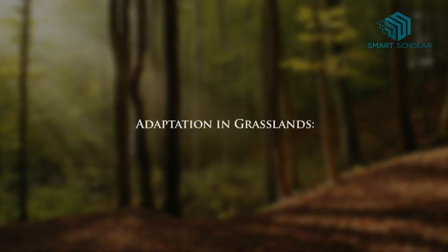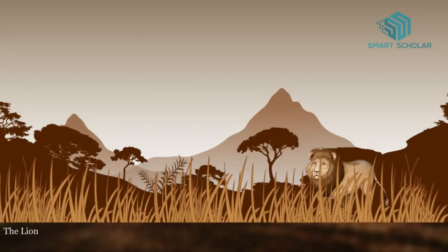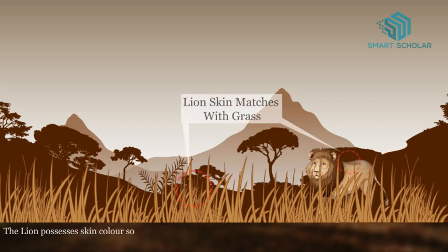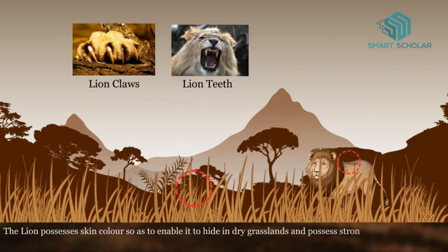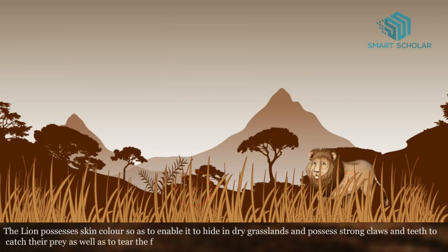Adaptation in Grasslands. The lion possesses skin color that enables it to hide in dry grassland, and possesses strong claws and teeth to catch its prey as well as to tear the food. They also have sharp eyesight which helps to locate prey correctly.